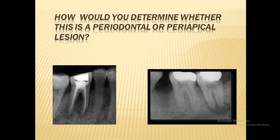So it's very important. In this case, a patient comes with periapical radiolucency and loss of bone height, and we want to know whether this is a periodontal or a periapical lesion. It's very important to diagnose and differentiate between the periodontal lesion and a periapical lesion.